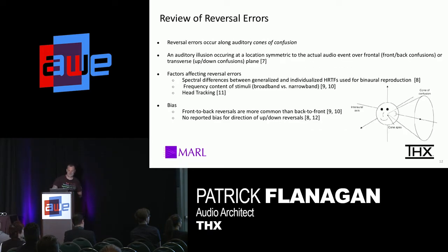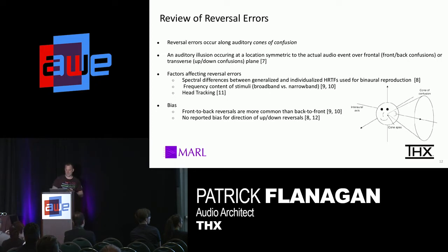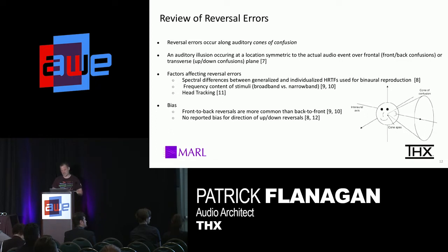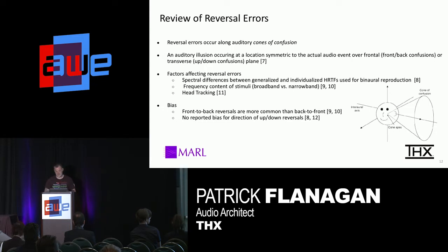Reversal errors occur along the auditory cone of confusion, and you have some in the median plane — an auditory illusion occurring at a location symmetric to the actual audio event over the frontal transverse plane. Factors affecting reversal errors include spectral differences in the HRTF — a mismatch between how a particular audio stimuli was coded versus how your ears are actually interpreting that spectral cue. Frequency of content, and then head tracking obviously causes a better ability to localize and reduces front-back errors.